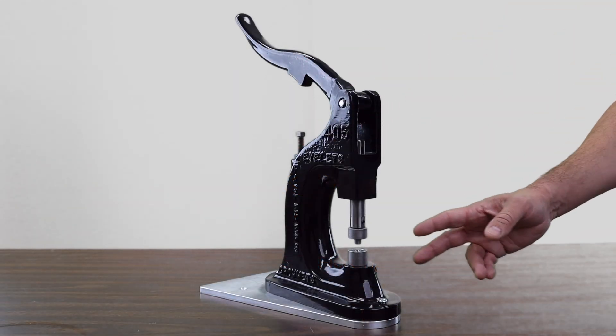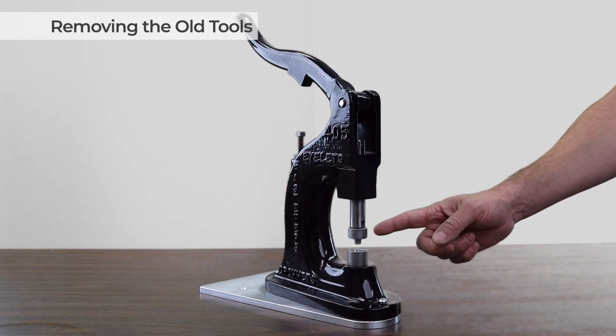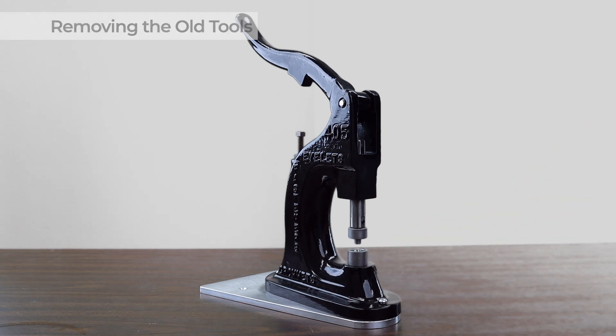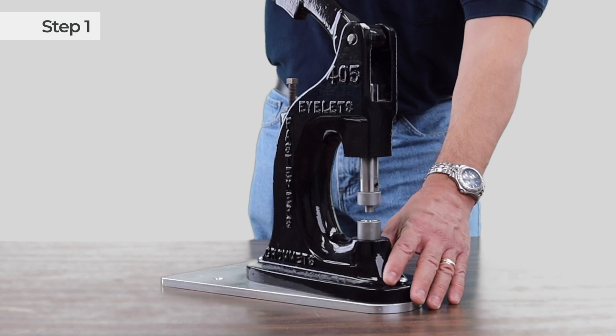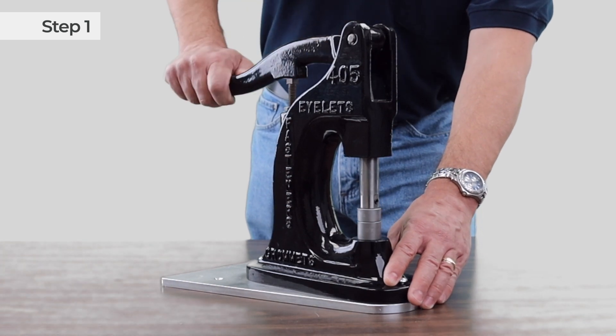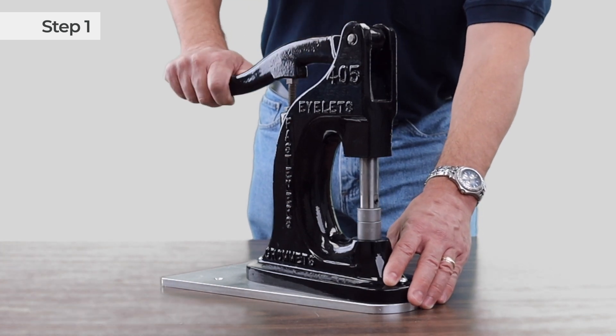I'm going to start by removing these tools - the top tool here and the bottom tool here. The first step, and this is very important, before you remove the tools, push the handle down. Self-piercing tools have a spring behind them that will push the top tool out with force. Even if you're not using tools with a spring, it's better not to let the top tool fall out.